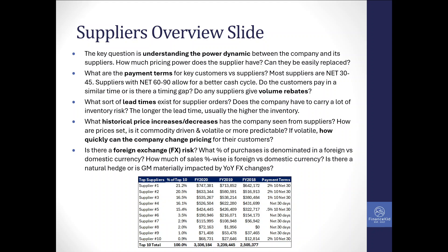Now let's move on to the supplier side. If the business has key suppliers or is buying materials or commodities, the SIM will typically present a top-10 supplier breakdown similar to the customer breakdown — with one, two, or three years of historical purchases and percentage breakdown by top supplier. In our example, we also included payment terms on the supplier side, similar to the customer side.